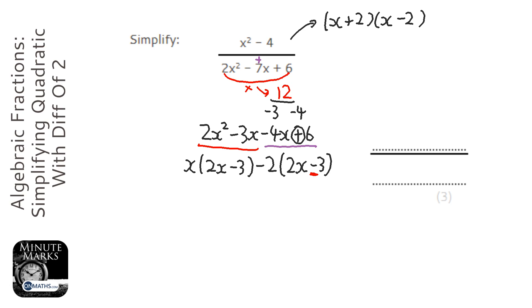Right, so we've got our x minus 2 and we've got our repeating bracket, and we put those together: x minus 2 and then just one of the repeating bracket. Okay, brilliant.